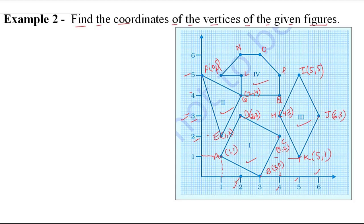Now for point L: horizontal is 2 and vertical is 5, so L is (2,5). M: horizontal is 1 and vertical is 5, so M is (1,5). N: horizontal is 2 and vertical is 6, so N is (2,6). O: horizontal is 3 and vertical is 6, so O is (3,6). P: horizontal is 4 and vertical is 5, so P is (4,5). Q: horizontal is 4 and vertical is 4, so Q is (4,4).